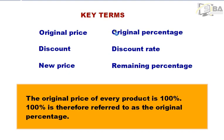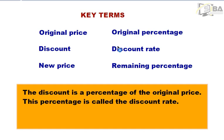We have to also understand that in terms of percentages, the original price of every product is 100%. So in our lessons, whenever we say the original price, we will be referring to 100%. We have to also understand that the discount given on any product is a percentage of the original price, and this percentage will be referred to as the discount rate.